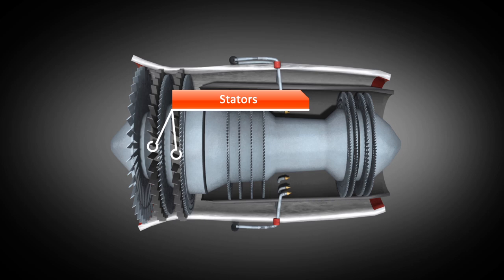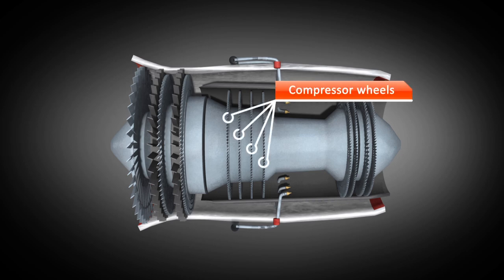Stators are installed between them, which are firmly attached to the nacelle. Only two stators are represented here, but usually there is a stator after each rotor. This is also the case for the other compressors, which are installed in the core of the engine.